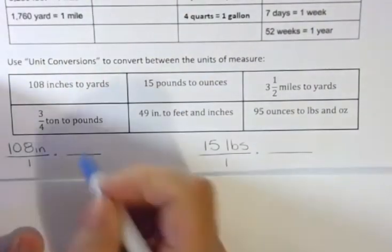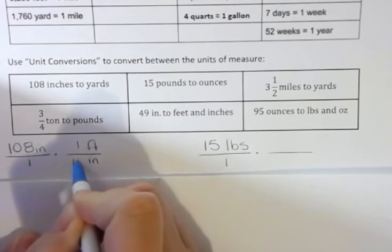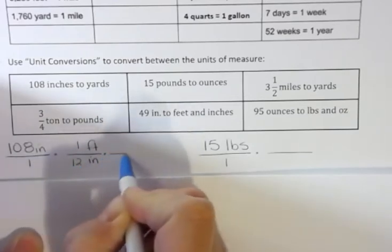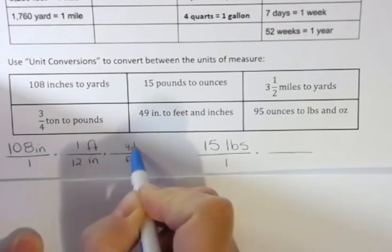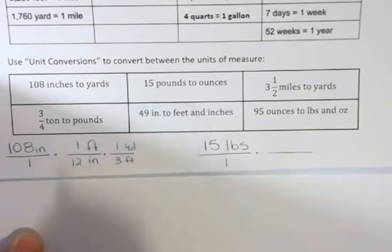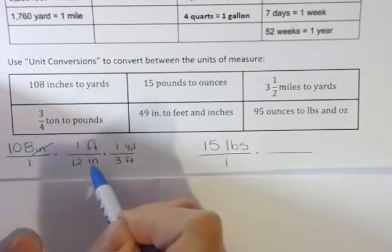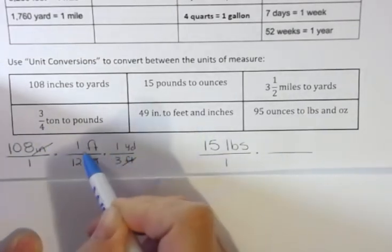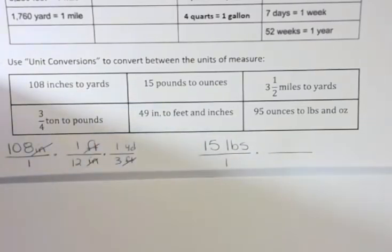I first want to get rid of inches and go into feet, and I saw from up above that for every one foot I have 12 inches. And then I want to do the next step where I want to get rid of feet and go to yards, and I know that there's one yard for every three feet. So this is the problem I'd have to work, and notice that the inches on top cancel the inches on the bottom, and the feet on top cancel the feet on the bottom, leaving behind yards.